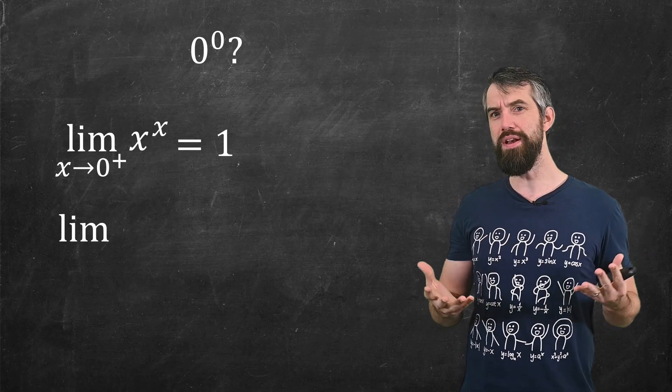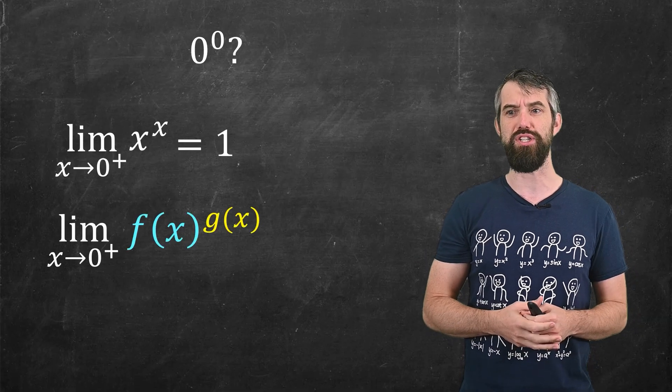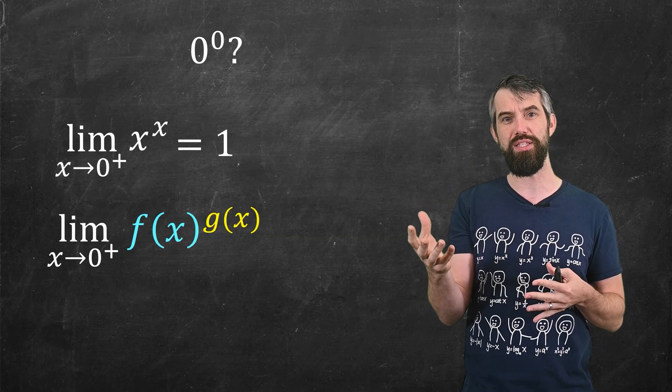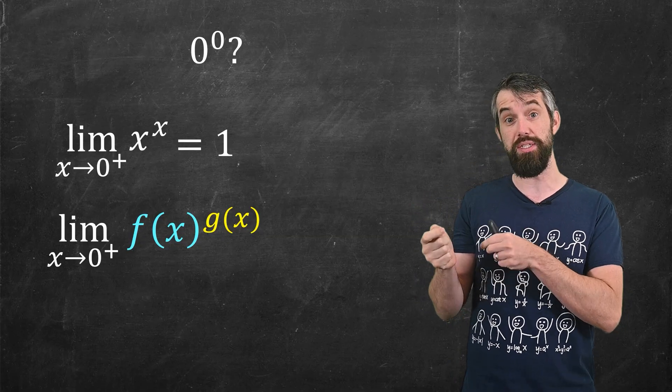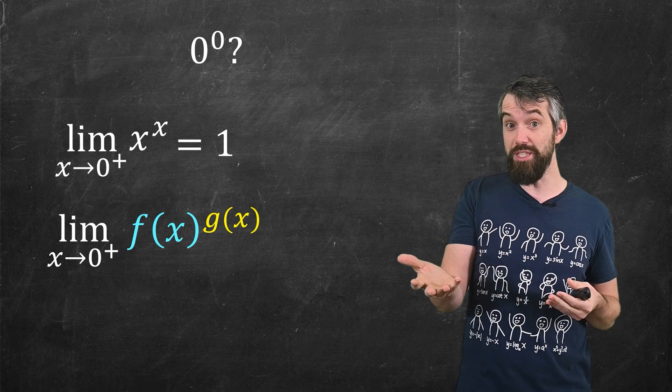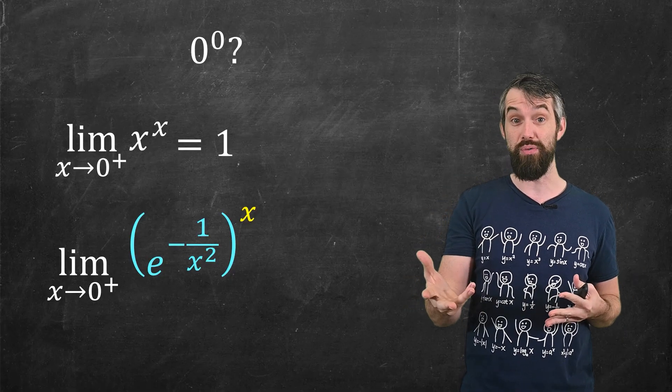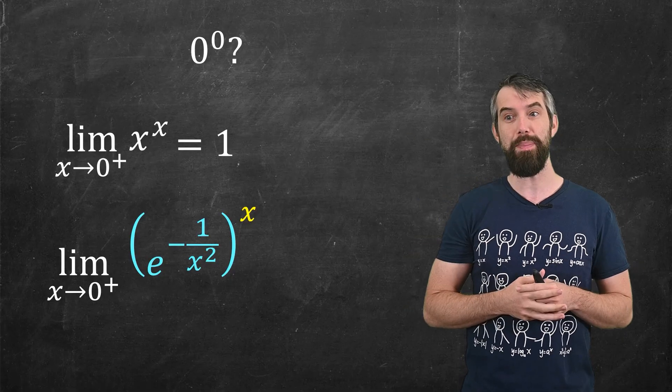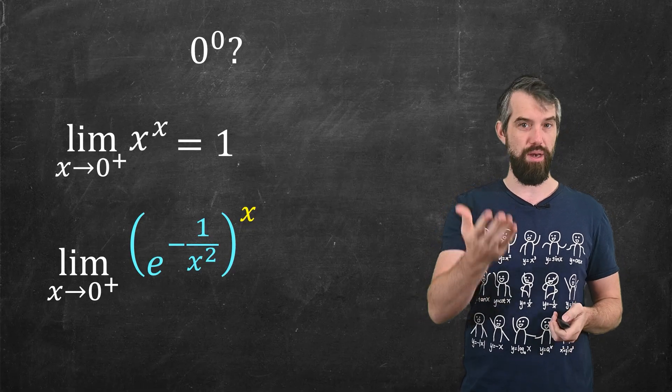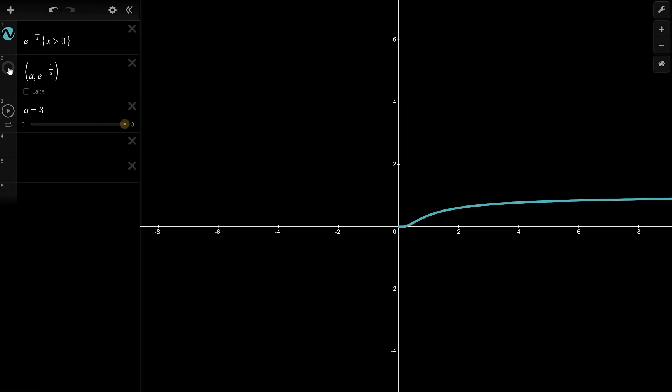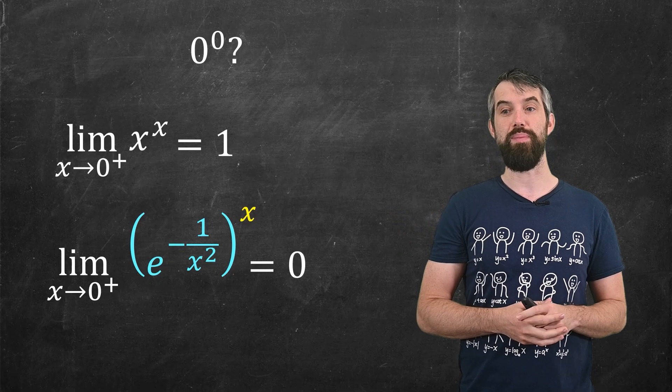But that's just one function. I could consider all sorts of functions of the type f(x) to the power of g(x), when f and g were themselves both going to zero. x to the x is one special case, but here's a completely different special case. How about the base could be e to the negative one over x squared, the top could be x. By the laws of exponents, I can multiply the x's through. This gives me e to the negative one over x. And here's that plot. As you can see, as x goes to zero, you get the value of zero.